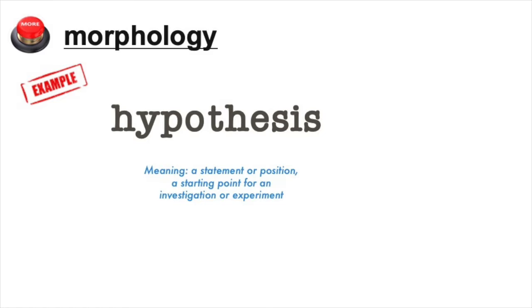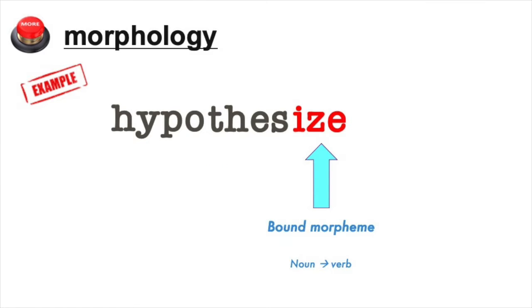Notice how the separate meanings of those two morphemes come together to make the meaning of the new word 'hypothesis.' Now let's add another bound morpheme — this time to the end of the word. The suffix '-ize' is another bound morpheme. In this case, we're turning the noun 'hypothesis' into the verb 'hypothesize.' Once again, we've also changed the meaning of the new word by adding this new morpheme to it.